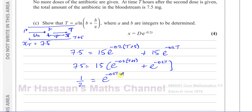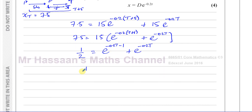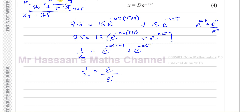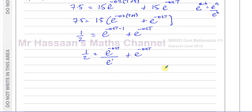So we have 1/2 = e^(−0.2T)/e + e^(−0.2T). Multiply everything by e: e/2 = e^(−0.2T) + e^(−0.2T)·e. Now take out e^(−0.2T) as a common factor: e/2 = e^(−0.2T)·(1 + e).